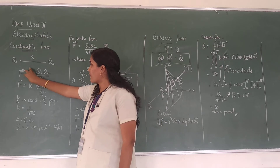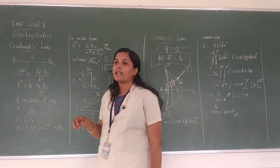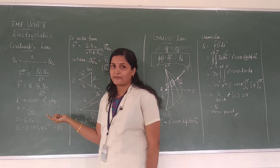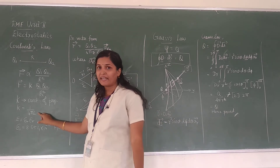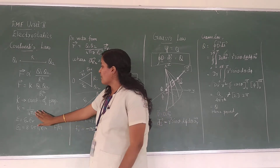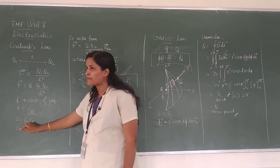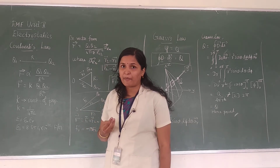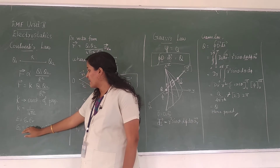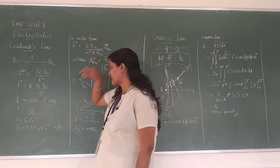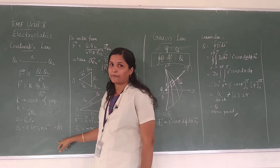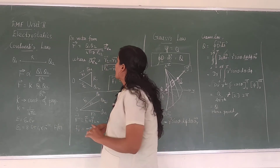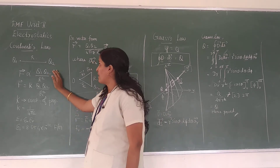This proportionality can be written with constant K, where K equals 1 over 4π epsilon. Here epsilon is the permittivity of the medium. Epsilon naught is the permittivity of free space; it is a constant given as 8.854 × 10⁻¹² Farad per meter. And epsilon r is the relative permittivity. This is the general form of Coulomb's law.